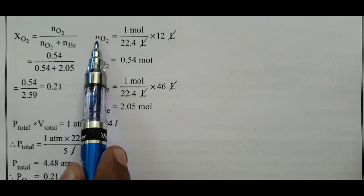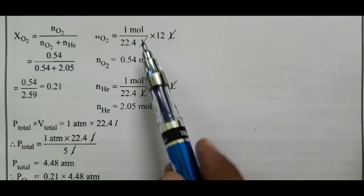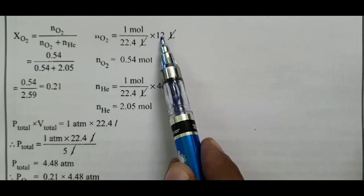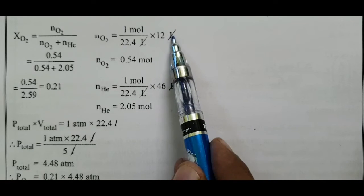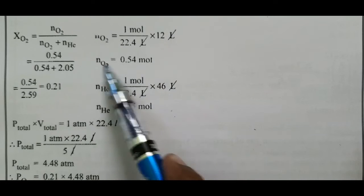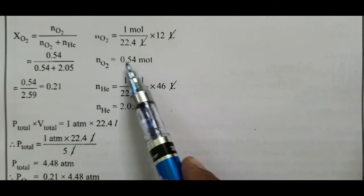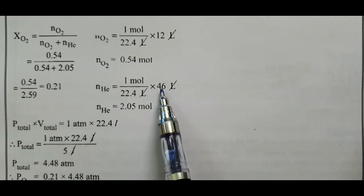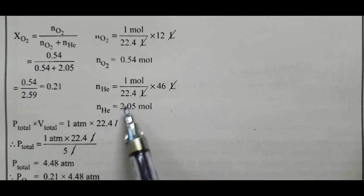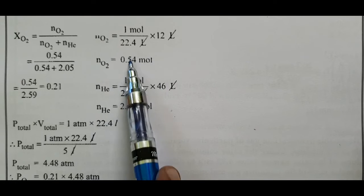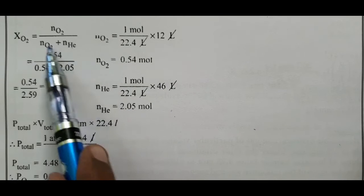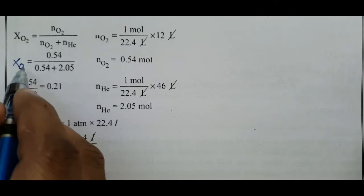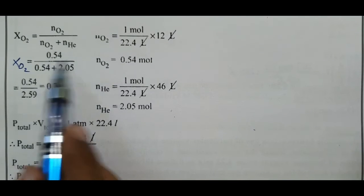Number of moles of O2 = 12 / 22.4 = 0.54 moles. Number of moles of He = 46 / 22.4 = 2.05 moles. Total moles = 0.54 + 2.05 = 2.59. Mole fraction of O2 = 0.54 / 2.59 = 0.21.